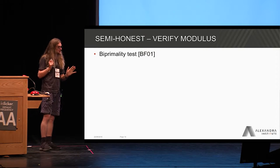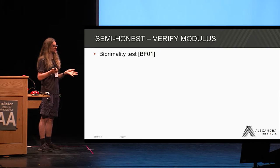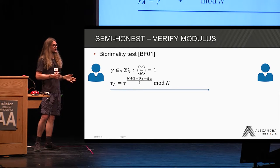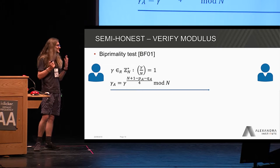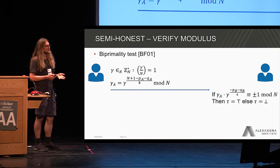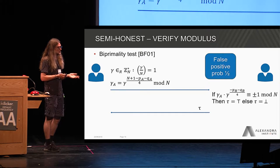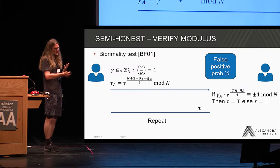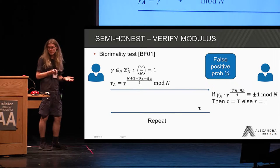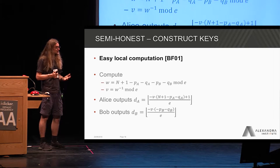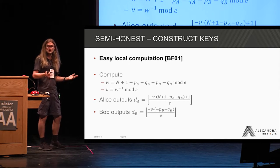Once we have the modulus, we need to execute a biprimality test. For this, we use excellent work by Boneh and Franklin from 2001. Without going into the math detail, it basically involves some exponentiations that need to be done s times to ensure that the public modulus is actually a product of two primes except with exponentially small probability. Each iteration can give a false positive with probability up to one half, which is why it needs to be executed many times. Finally, computing the actual additive share of the keys can be done quite efficiently, also using the approach by Boneh and Franklin.